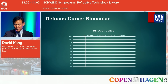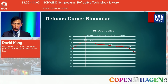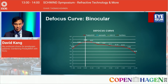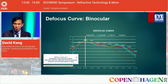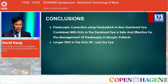The binocular defocus curves for Presbymax show 0.1 logMAR or better maintained from 0.2 logMAR all the way down to minus three and a half diopters of sphere. Comparing this with published data from our distinguished moderator for multifocal IOLs, we can see the excellence of this approach between the ages of 46 and 56 — leveraging the human crystalline lens.